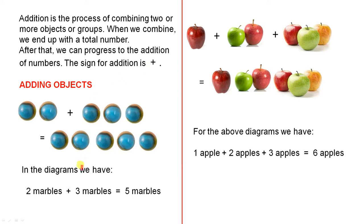Adding objects. In the diagrams, we have two marbles plus three marbles. So there's your two marbles. There are your three marbles. And that equals five marbles because we just add them up.